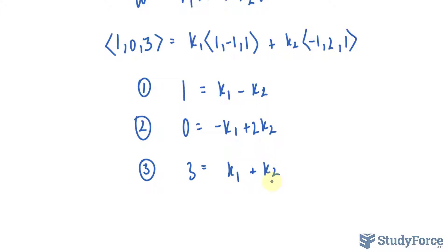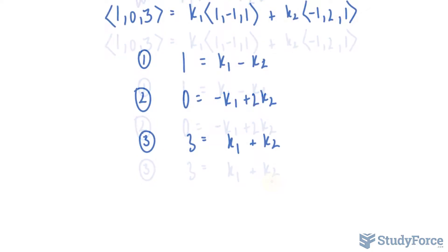If I can find a solution for k₁ and k₂, that means w is a linear combination of the two vectors. Now you can solve this as a linear system, or you can put it as a matrix and solve it from there. So let's go ahead and do that.